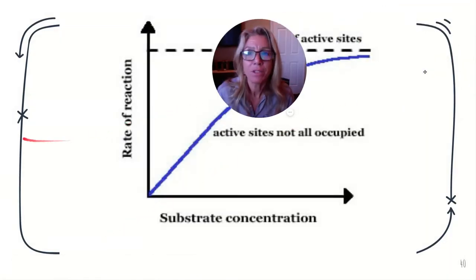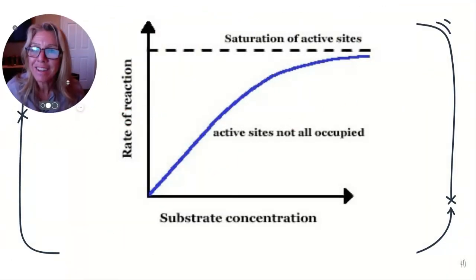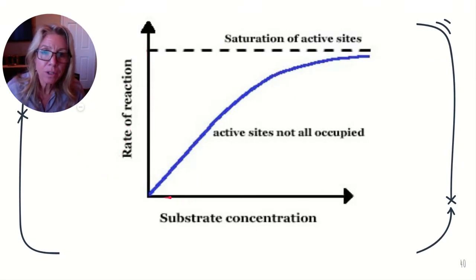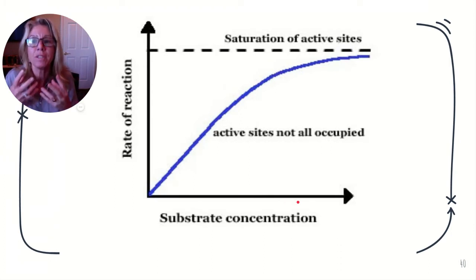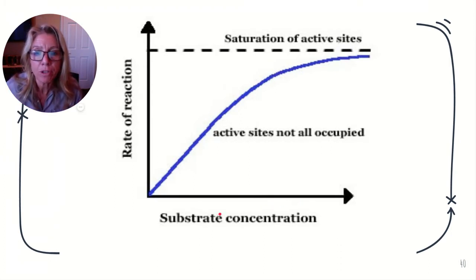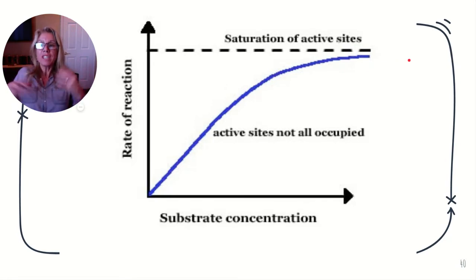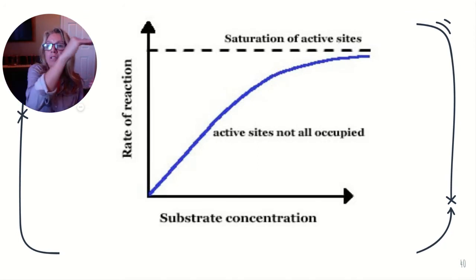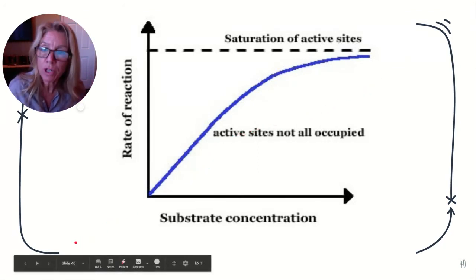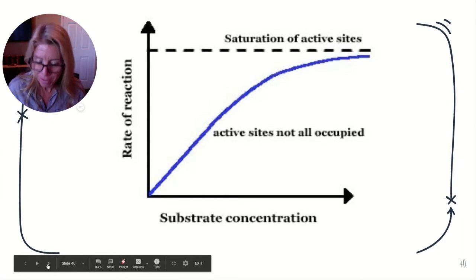As you increase the amount of substrate — your reactants — the rate of the reaction goes up. But eventually it levels off, because no matter how much substrate you have, all your enzymes are busy. So the amount of substrate affects your reaction rate.